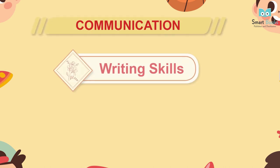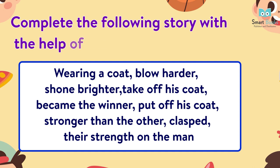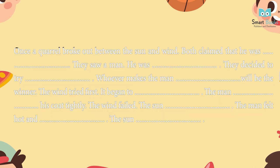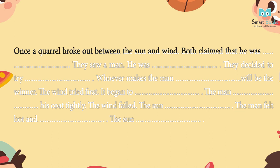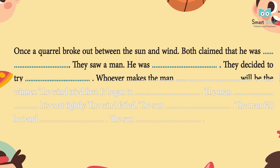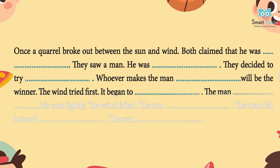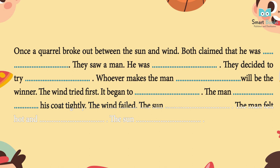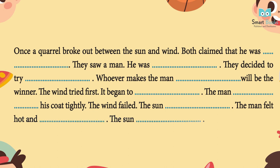Communication — Writing: Complete the following story with the help of the hints given below. Once, a quarrel broke out between the sun and wind. Both claimed that he was stronger than the other. They saw a man. He was wearing a coat. They decided to try their strength on the man. Whoever makes the man take off his coat will be the winner. The wind tried first. It began to blow hard, but the man held his coat tightly. The wind failed. The sun shone brighter. The man felt hot and took off his coat. The sun became the winner.